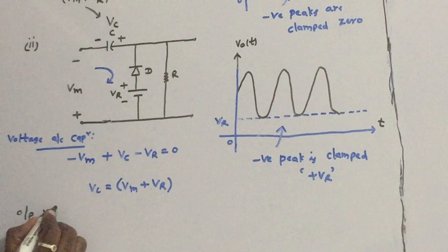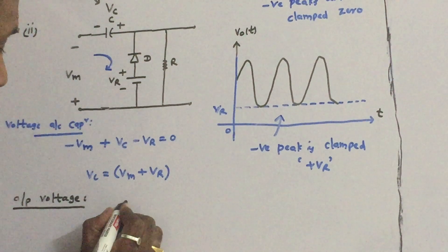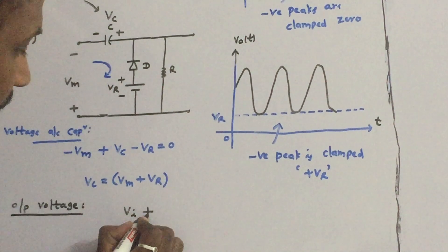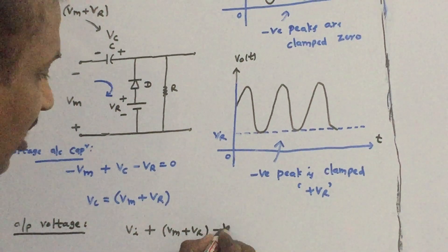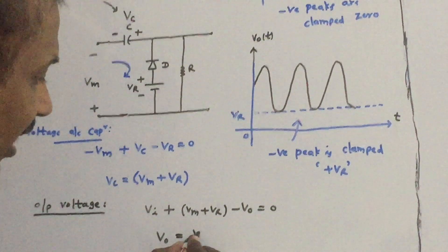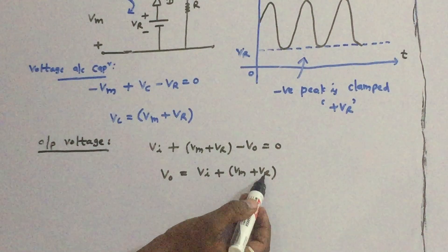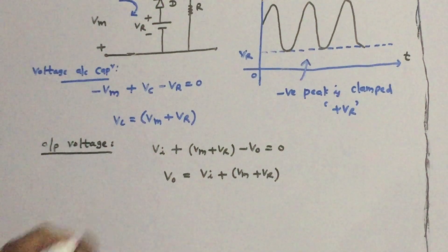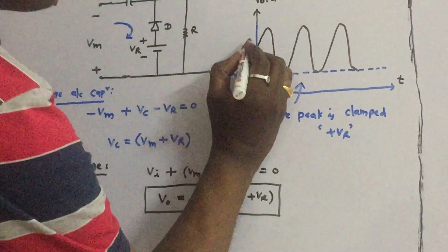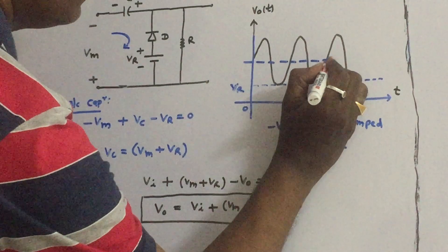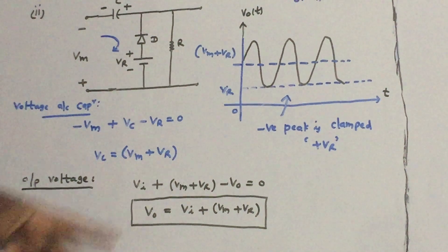The output voltage expression is straightforward. Once you derive the voltage across the capacitor, apply KVL: Vi plus (Vm plus Vr) minus V0 equals zero. Therefore V0 equals Vi plus Vm plus Vr. The previous expression was Vi plus Vm; because of this reference voltage Vr with this polarity, we add Vr. The DC level of this waveform is Vm plus Vr.